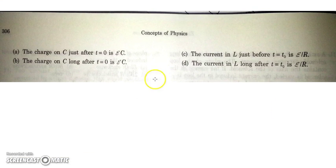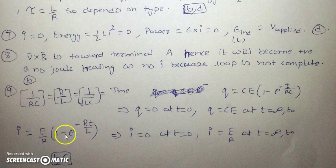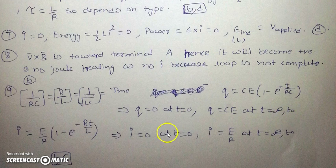Looking at the options: the charge on the capacitor at t = 0 is not CE — that option is incorrect. The charge on the capacitor long after T₀ will be CE — correct. The current in the inductor just before t = T₀ will be E/R — correct. When the switch is opened, the current in the inductor will decrease to zero — so that option is incorrect. From the equations: q = 0 at t = 0, q = CE at t = ∞, current = 0 at t = 0, and current = E/R at t = ∞. So B and C are the only correct options.